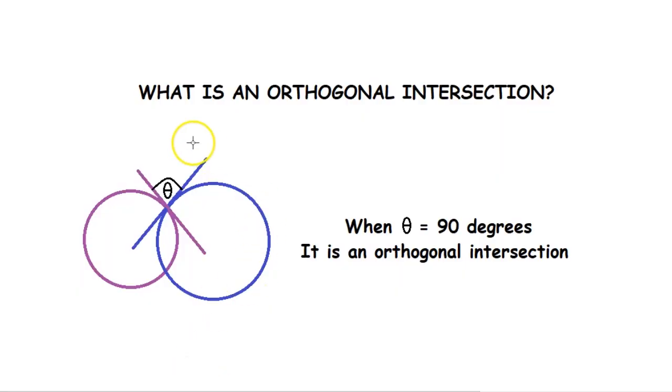First let's learn what is an orthogonal intersection. Let's take these two intersecting circles.